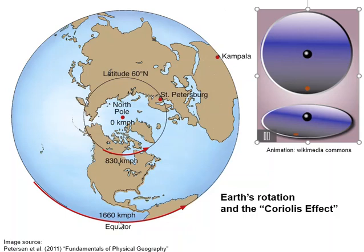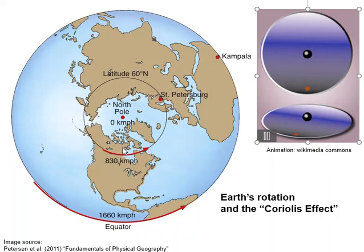The same happens if you take off or send a packet of air moving from this location heading north. It has this angular momentum — this rotational velocity of 1,600-plus kilometres per hour — and it retains that as it moves north. The Earth underneath it is moving gradually slower and slower, but our plane or packet of air is going at the faster rate. So as it moves north, it will appear to drift to the right on this diagram, because the Earth underneath is moving slower and slower as we go further north. There's an apparent deflection to the right because of the momentum inherited by the moving package of air versus the actual velocity of the ground beneath it.